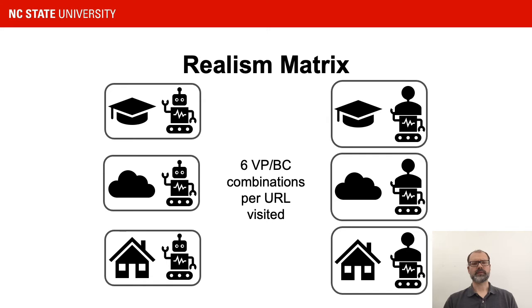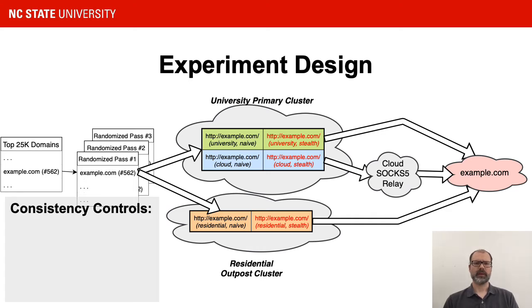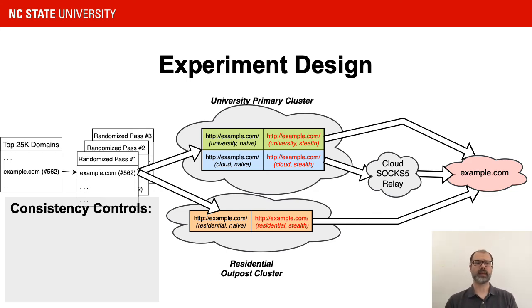With our realism matrix filled in, we have six combinations of options for each URL we visit. The URLs we visit are the landing pages of the Tranco top 25k domains. We visit them in three independent crawls in randomized order using a somewhat complex setup described in the paper. The most important factor of our experiment design is how much work we put into making uniform the client-side runtime environment, because if we allow client differences to inject noise into our data, we will not be able to assess the actual impact of the vantage point or the browser config. We can't control what happens on the server side, but we can control how uniform the clients are, and we make every effort to do that.